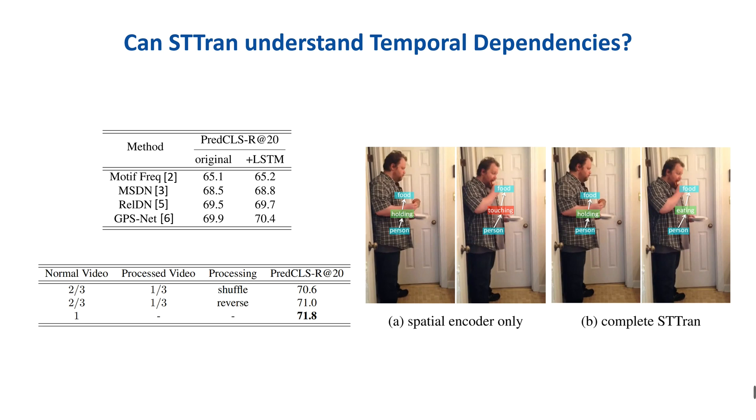To explore the effectiveness of temporal dependencies, we grafted LSTM onto several baselines. It shows that all baselines can gain more or less from the temporal dependencies. However, the previous methods are designed for images. This is why we propose spatial temporal transformer to make better use of temporal information.